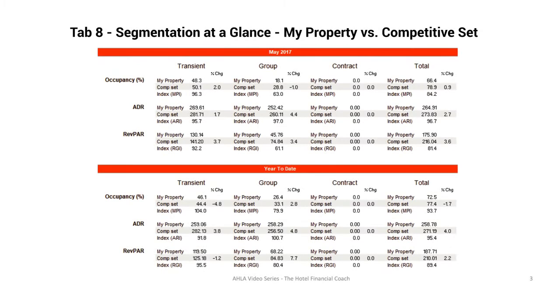On the last slide, we're looking at the report that STR would supply to a hotel, where they break out the occupancy and rate by transient, group, and contract. Each part of this comp set report is critical to understanding where your property is performing relative to the competition, and whether you're losing or gaining share in either the transient, group, or contract market segment. We can look at it for the month and also year to date.